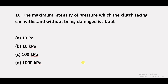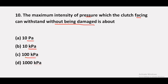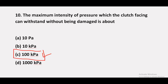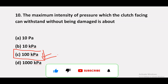Question 10: The maximum intensity of pressure that the clutch facing can withstand without being damaged is about — option A: 10 Pascal, option B: 10 kilopascal, option C: 100 kilopascal, option D: 1000 kilopascal. The answer is C — 100 kilopascal.